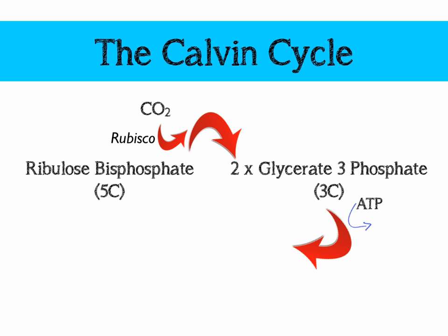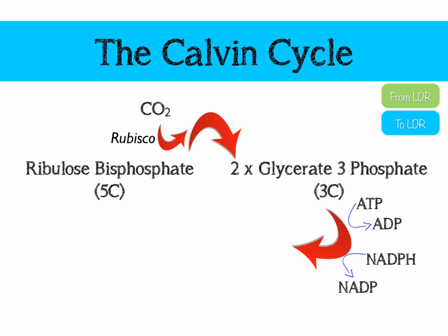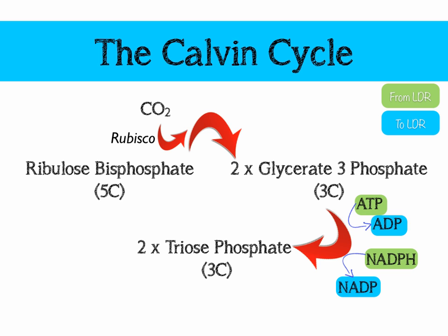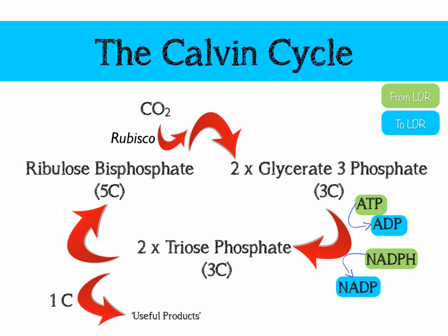To convert G3P to triose phosphate, we need ATP to provide the energy and NADPH to provide the reducing power. NADPH becomes oxidized back to NADP as it causes G3P to become reduced. Everything coming from the light-dependent reaction — ATP and NADPH — is used here, and NADP and ADP go back to the light-dependent reaction. This forms two molecules of triose phosphate, a three-carbon phosphorylated sugar. Most is converted back into RuBP to keep the cycle going, but one carbon is lost and used to build useful products.